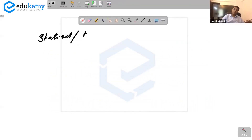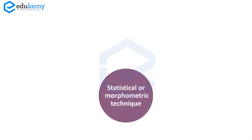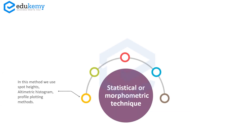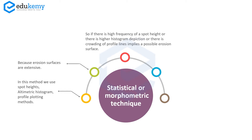In the statistical morphometric method we use spot heights, altimetric histograms, and profile plotting. Because erosion surfaces are extensive, if there is high frequency of a spot height, or higher histogram depiction, or crowding of profile lines, this implies a possible erosion surface.